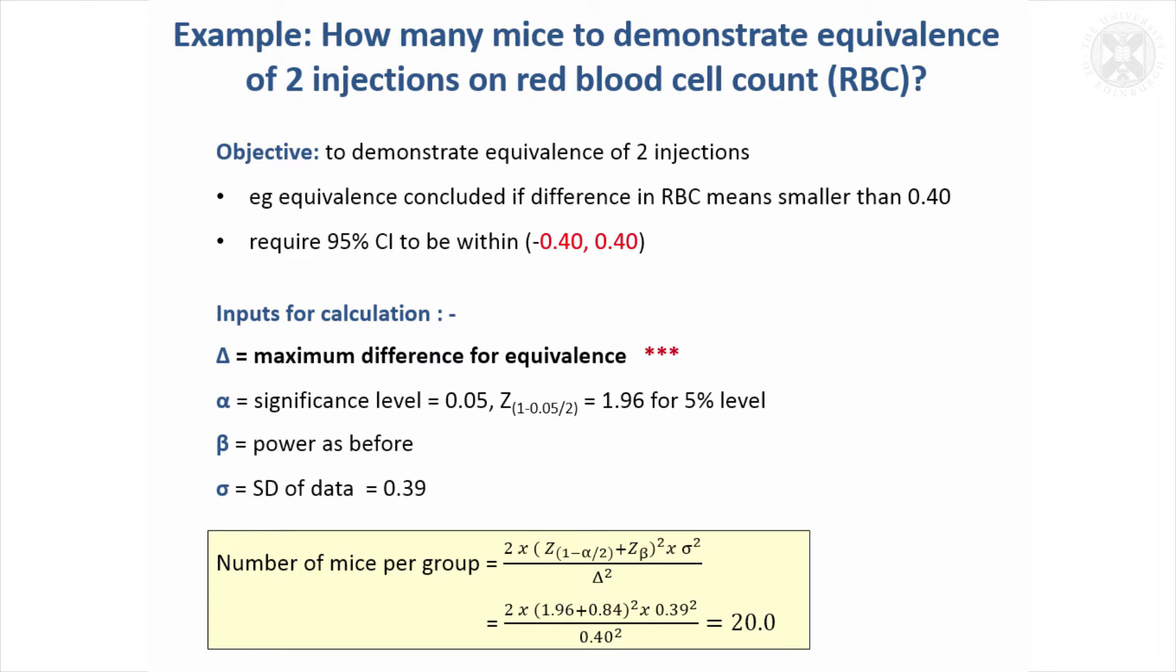So the question is, what size of sample do I need to demonstrate that? And so if we think about an example where we're looking at the equivalence of two injections, the same example actually, the chlorum and the control injection, we'll say we'll conclude that they're equivalent if the red blood cell means a smaller than 0.4. So we require our 95% confidence interval to be between minus 0.4 and plus 0.4.